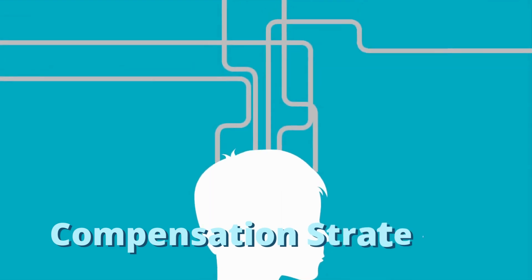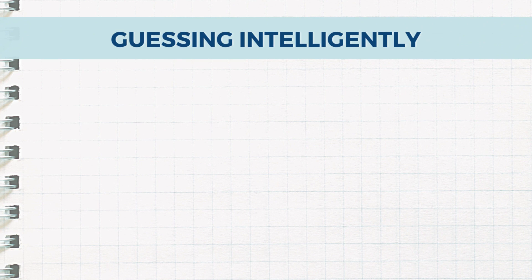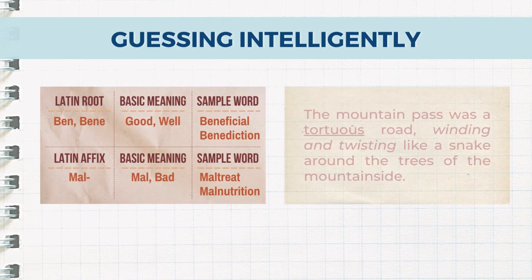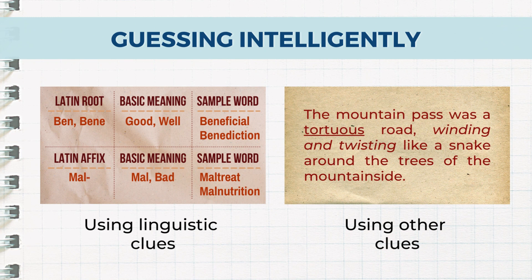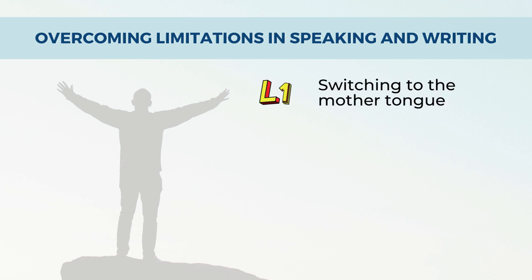We now have the compensation strategies. The first one is guessing intelligently, which is of two types: using linguistic cues and using other clues, such as context clues. The second one is overcoming limitations in speaking and writing. Under this, we have switching to the mother tongue — this entails using the mother tongue for an expression without translating it. This strategy may also include adding word endings from the new language onto words from the mother tongue.